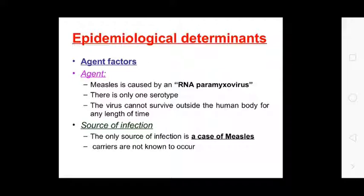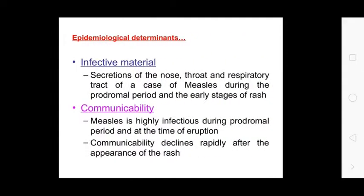Source of infection: the only source of infection in measles is human cases; carriers do not occur. The infective material includes secretions of the nose, throat, and respiratory tract during the prodromal period and the early stage of the rash.